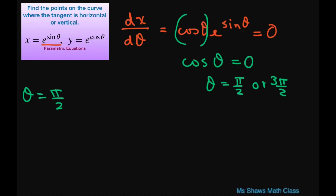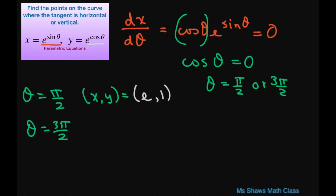For theta equals pi divided by 2: x equals e to the power of sine of pi over 2, which is e to the first power, so x equals e. For y, cosine of pi divided by 2 is zero, so y equals e to the zero, which is 1. For theta equals 3 pi divided by 2: x equals 1 divided by e, and for y that gives negative 1, so y equals e to the zero, which is 1.